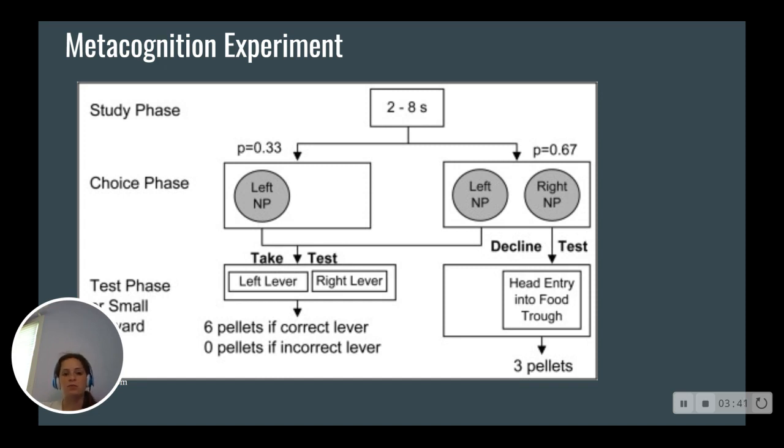Whenever the sound was between two to three seconds, or seven to eight seconds, somewhere on the extreme end of the spectrum, the rats would usually accept the test because they were confident in their answer, and they had a better chance of getting the six pellets and more reward. But when the test was between four and six seconds, the rats weren't as confident in their answer, and they were at risk of getting no pellets, so they'd settle for three pellets.